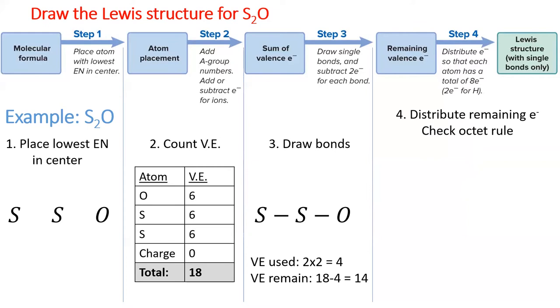Next, we'll draw bonds to connect the exterior atoms to the central atom, which uses four total electrons. Distributing the remaining electrons does not give each atom a full octet. And so, we have to turn one of the lone pairs into a double bond.